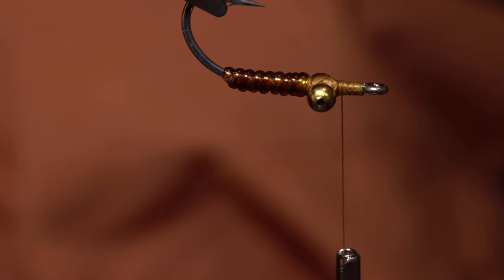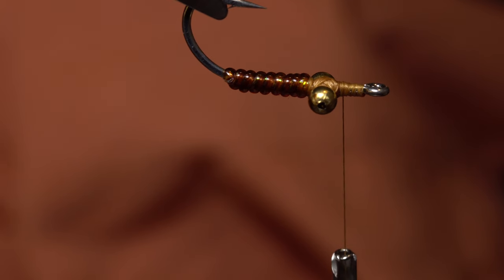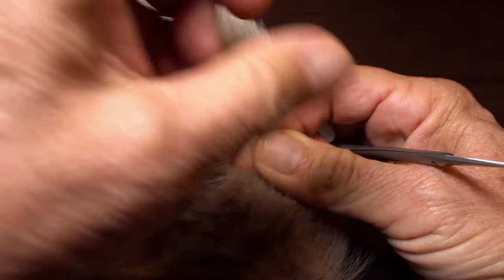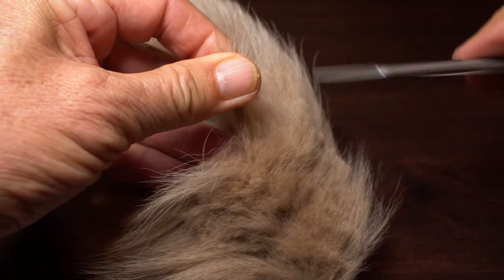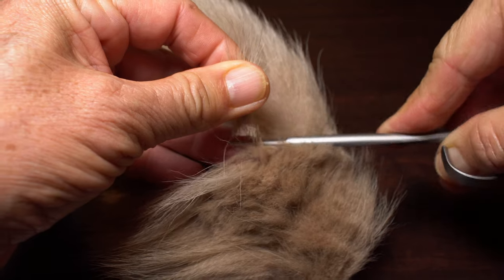Finally, invert the fly to its hook point up position. In other words, how it will ride when it's fished. Although calf tail is traditionally used to wing charlies, Peter's going to use softer and finer arctic foxtail.